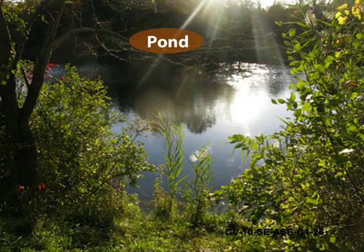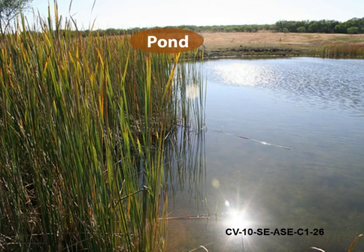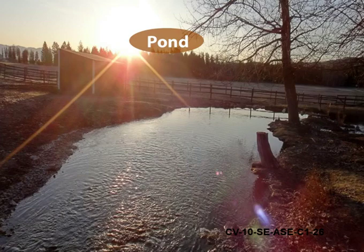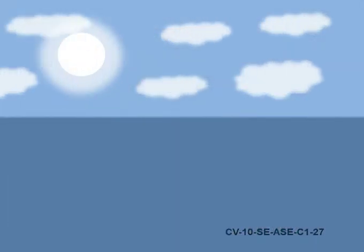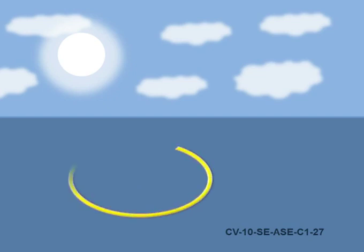Let us understand what happens in an ordinary pond. When water in an ordinary pond is heated by solar radiation, heat from the bottom of the pond rises and reaches the surface. A convective zone is created and thus the heat gained is lost to the atmosphere, and hence the temperature is maintained.